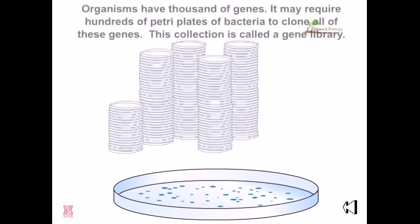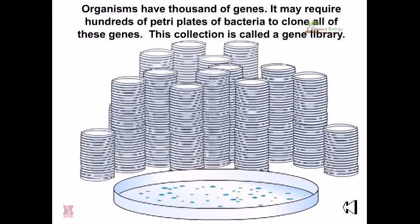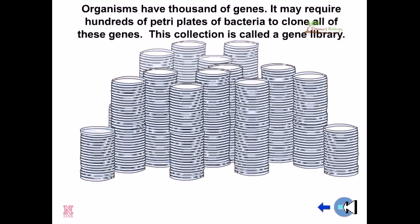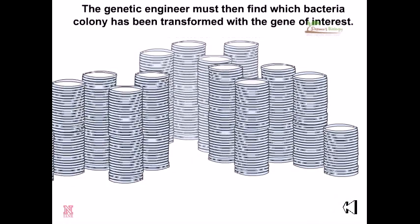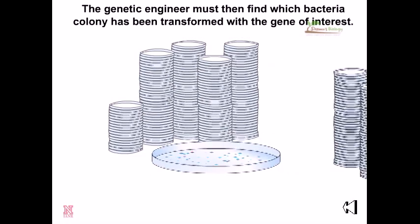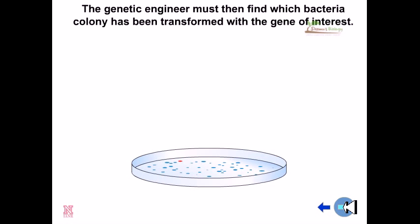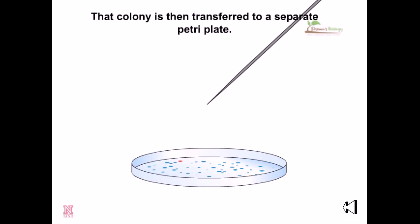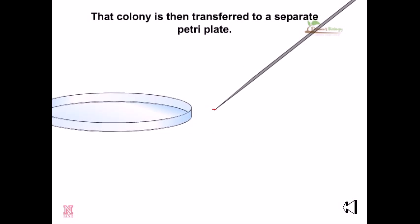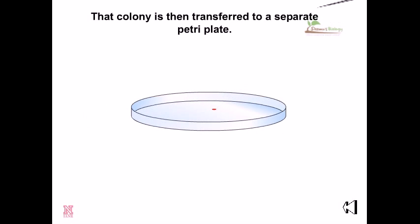Since organisms have thousands of genes, it may require hundreds of petri plates of bacteria to clone all of these genes. This collection is called the gene library. The genetic engineer must then find which bacterial colony has been transformed with the gene of interest, and that colony is then transferred to a sample petri plate.